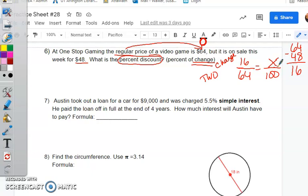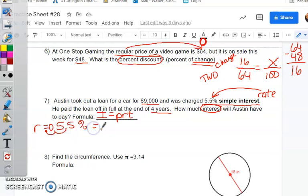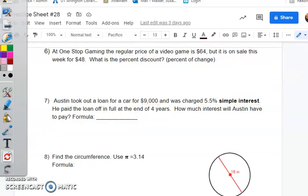On number seven, it says Austin took out a loan for a car for $9,000 and was charged a 5.5% simple interest rate. He paid the loan off in full at the end of four years. We only want to know the interest. Guys, please remember, some of you really are doing a good job on this, but sometimes you forget one of the numbers. So just remember, simple interest is I equals PRT. I party. Principle times rate times time. Remember, for the rate, change the percent to a decimal. One, two, and then of course we will end up multiplying. So there is your hint for this problem. Multiply carefully.